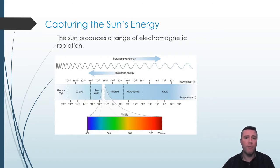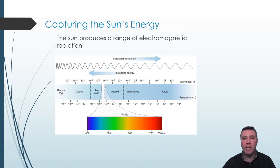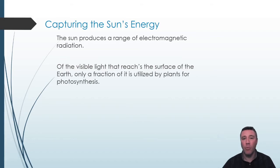Blues, purples, and violets exist in the shorter-wavelength, higher-energy region, while reds and oranges are found in the longer-wavelength, lower-energy portion. It is this visible light that plants rely upon for photosynthesis. Of the visible light that reaches the Earth's surface, only a tiny fraction of it is used in powering photosynthesis.